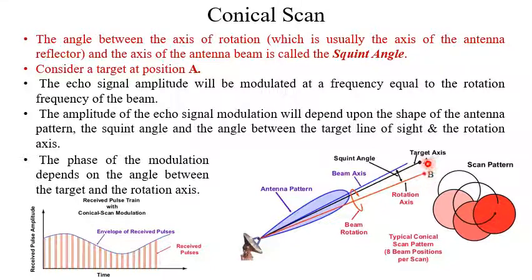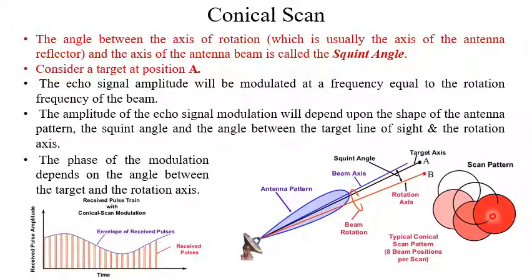Consider the target at position A. The echo signal amplitude will be modulated at a frequency equal to the rotation frequency of the beam. Since the beam is rotating, when the beam is away from the target it produces less amplitude, and as it moves toward the target it gradually produces higher amplitude. When it is on or very close to the target, its amplitude will be maximum. So during this rotation, the amplitude of the received pulse will be modulated accordingly — more close to the target means higher amplitude, away from the target means lower amplitude.